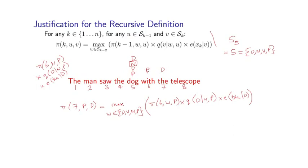Well, the highest scoring tag sequence ending in n, p, d at positions 5, 6, 7 has to include the highest scoring tag sequence ending in positions n and p at positions 5 and 6. That's what this probability is. And then we multiply in the trigram parameter q and the emission parameter e to take into account the probability for this tag and this emission probability.